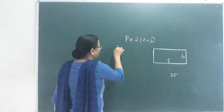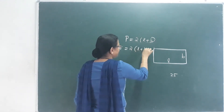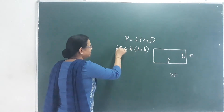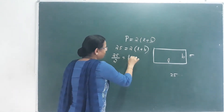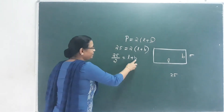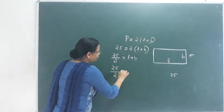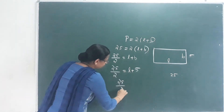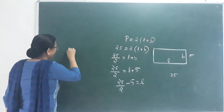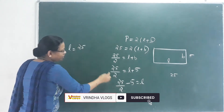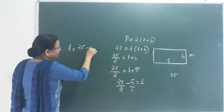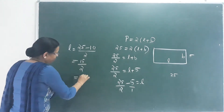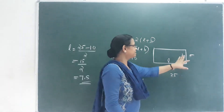2 into L plus B is 25. One side is 5, so let's say the breadth is 5. Then 25 by 2 equals L plus 5. The length equals 25 by 2 minus 5. Cross multiplying, that gives 15 by 2. Length equals 7.5, breadth equals 5.